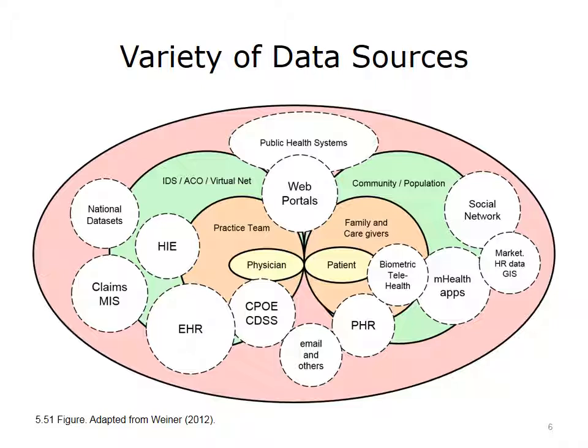Not only has the adoption of certain health IT systems increased over the last decade, but also the variety of growing data sources has expanded rapidly. This diagram shows physician and patient interaction and how each works within a larger context — the physician with his or her practice team and eventually with the larger integrated delivery system (IDS) or Accountable Care Organization (ACO), and the patient with his or her family and the larger community. In this larger context, a long list of data sources have emerged that can be useful for population health analytics.